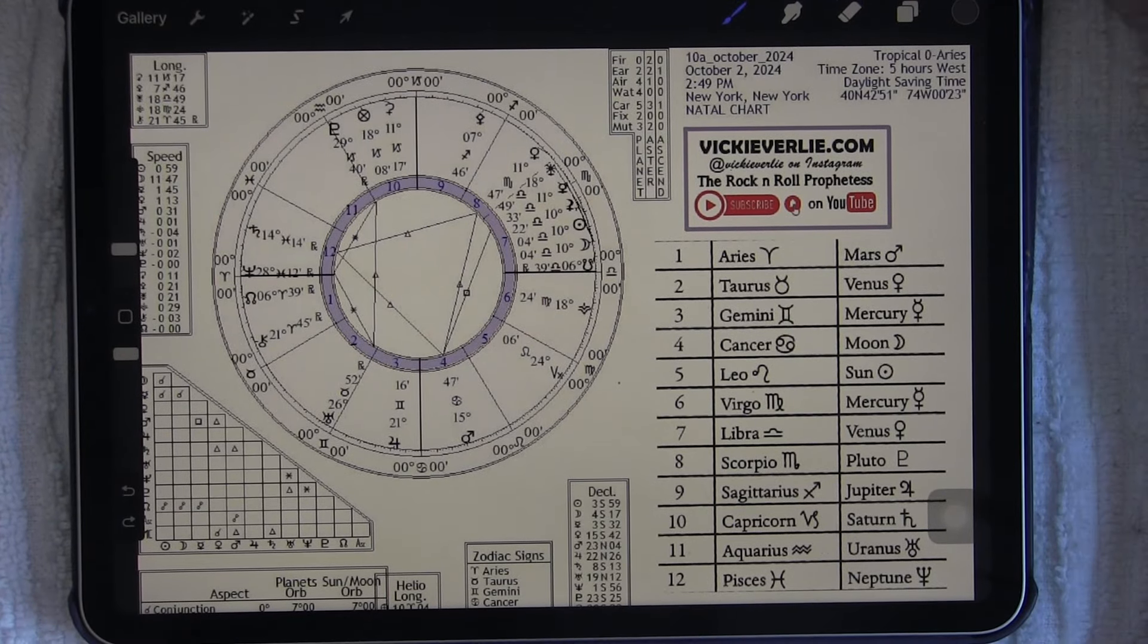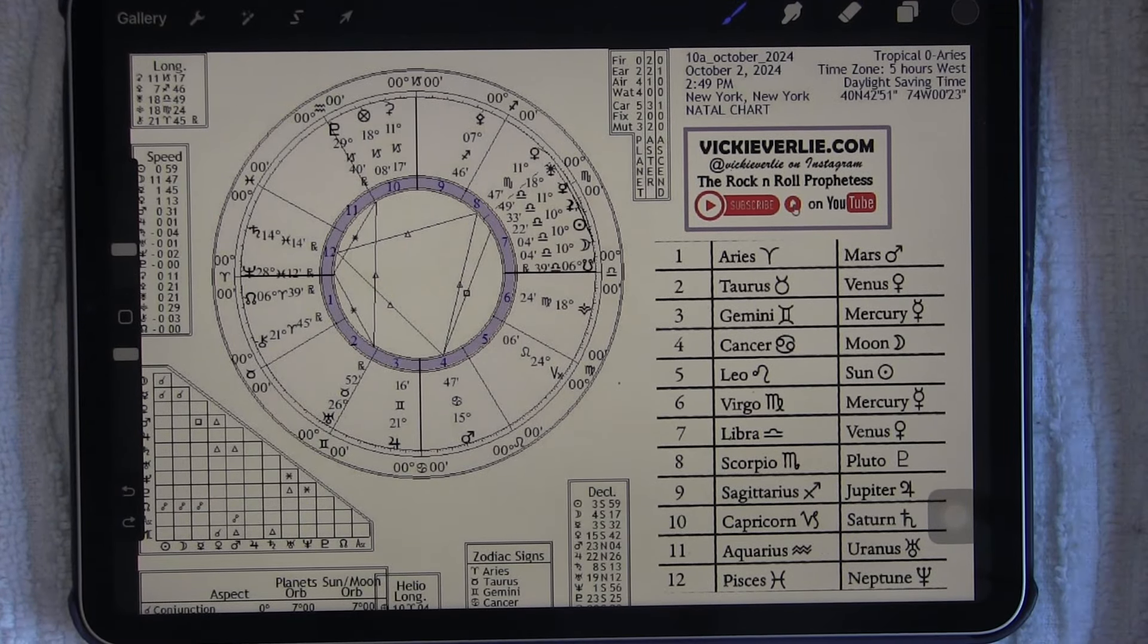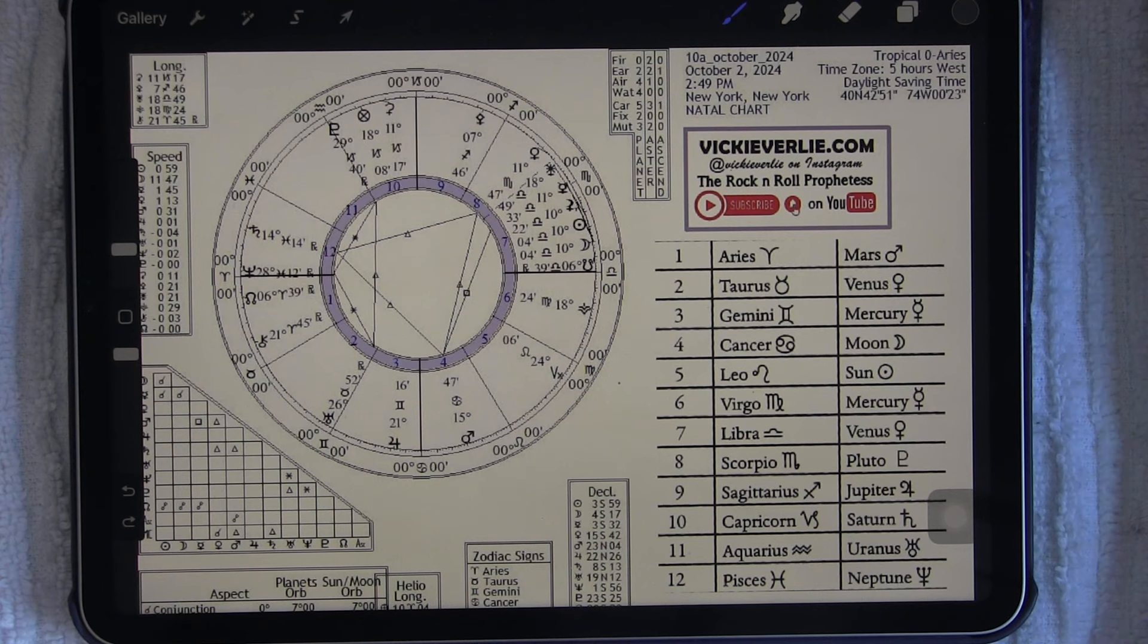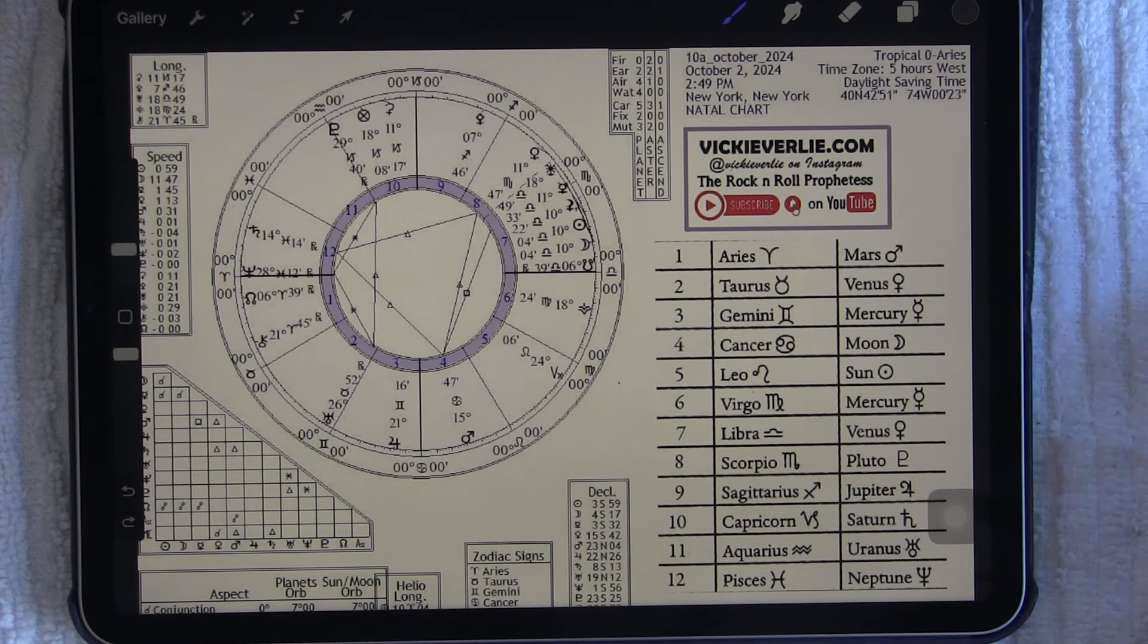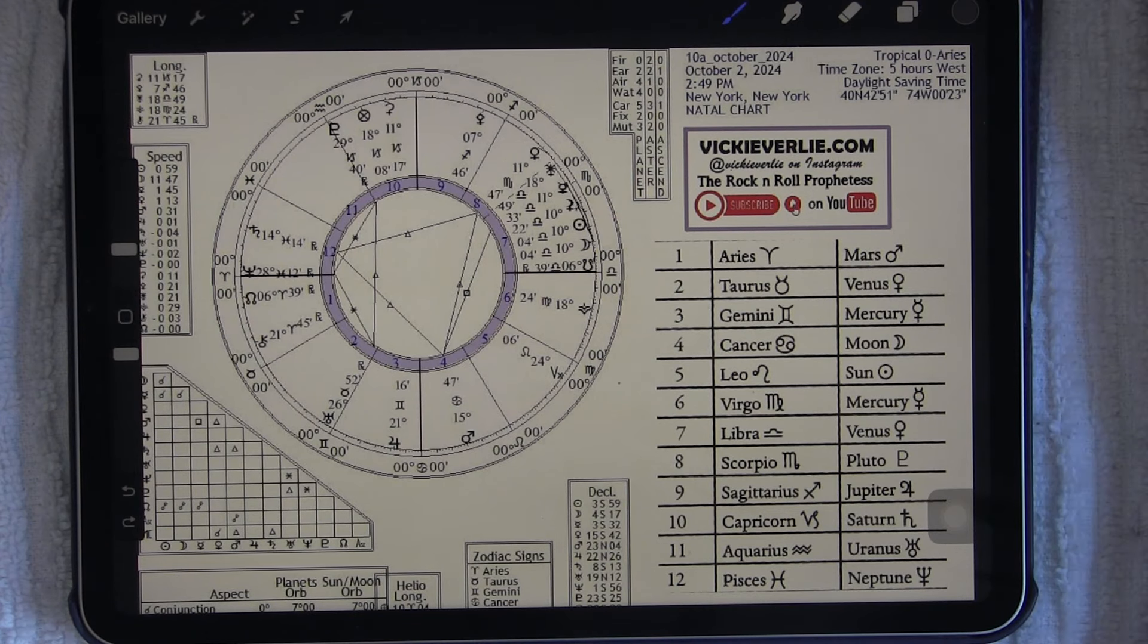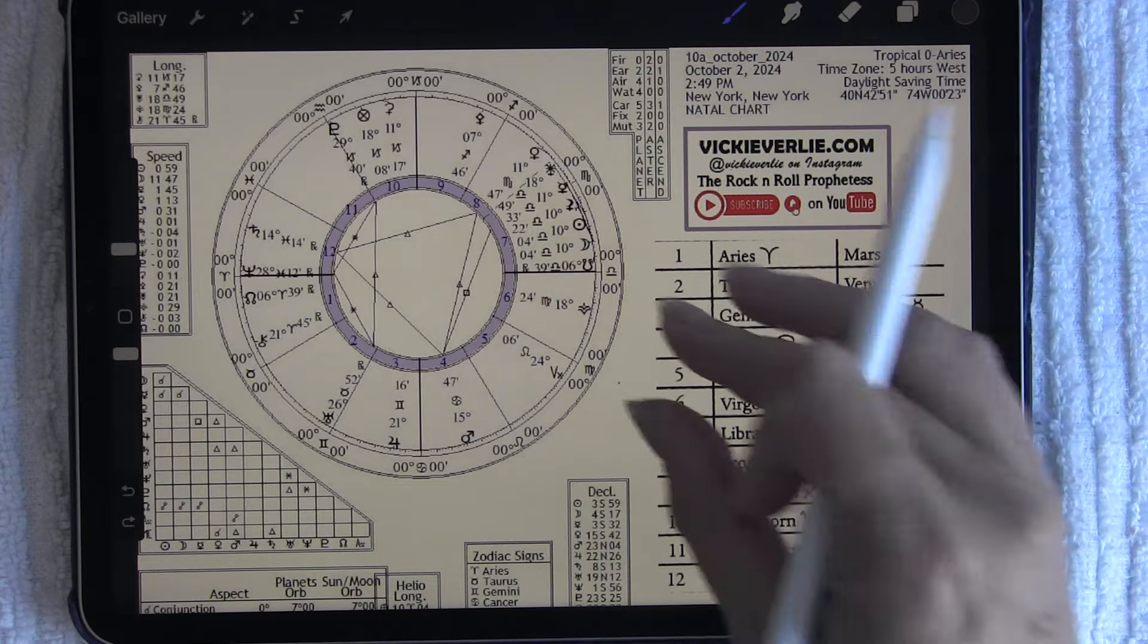October 2024. The last eclipse of the season, the last eclipse of 2024, and the last eclipse of Libra for many years to come. So a lot of lasts are happening here. This is going to be occurring on October 2nd, 2024, 2:49 p.m. Eastern, but times will vary depending on your location. My name is Vicki Verlie and you are watching the Rock and Roll Prophetess. This is a psychic or intuitive reading, so it does color outside the lines quite a bit and I do get messages and downloads from my guides as the reading proceeds.